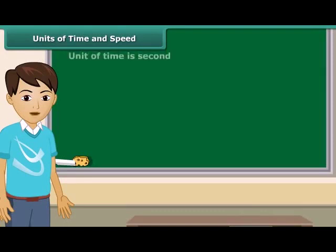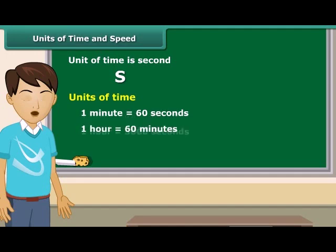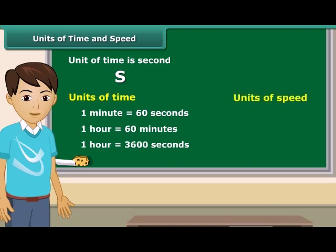The basic unit of time is second. Its symbol is S. Larger units of time are minutes and hours. One minute is equal to 60 seconds and 60 minutes are equal to one hour. The basic unit of speed is meter per second. We can also express it in other units such as meter per minute and kilometer per hour. We write the symbols of all units in singular.